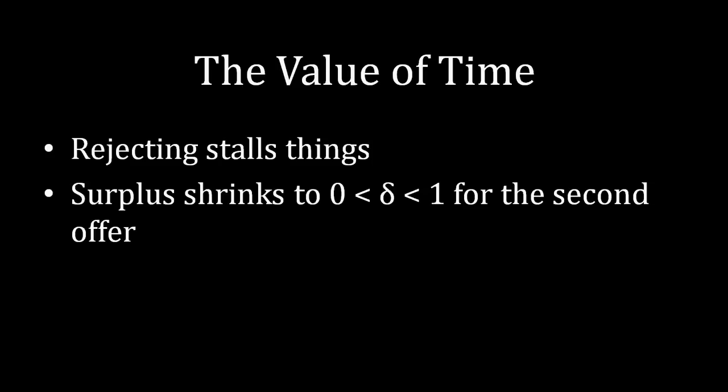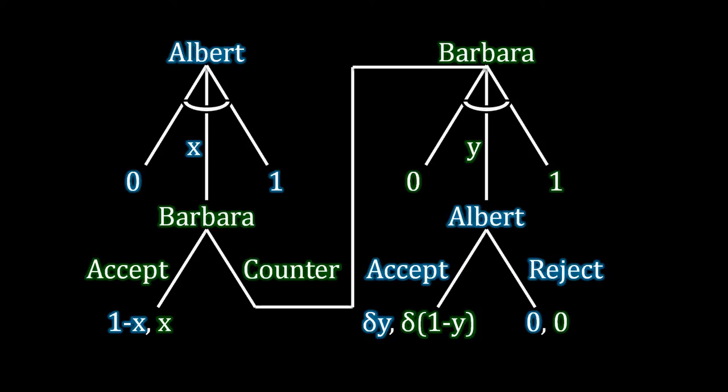It might help to actually see this in terms of a game tree and where this delta is coming into play. So this is the game that we're analyzing. Albert is making a first offer x between 0 and 1 to Barbara. If Barbara accepts, then that implements that settlement. So she receives a value of x and Albert receives the remainder. This should look very similar so far to what we've been looking at before in the ultimatum game.